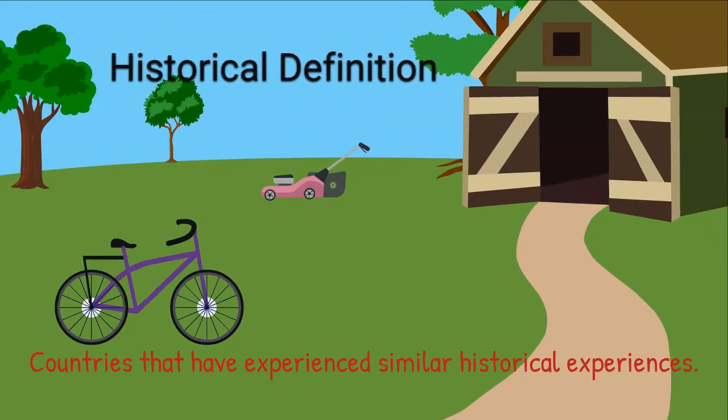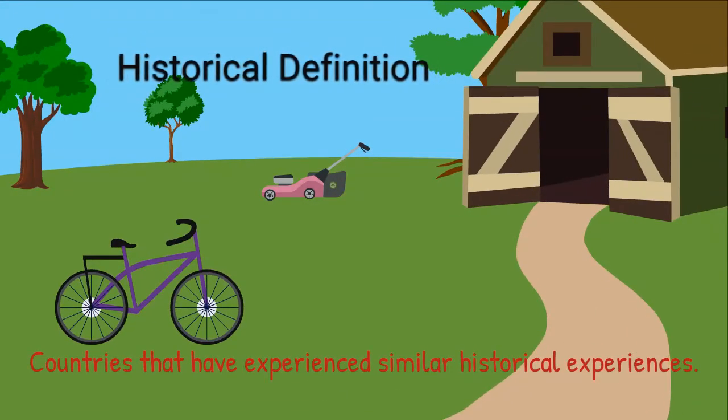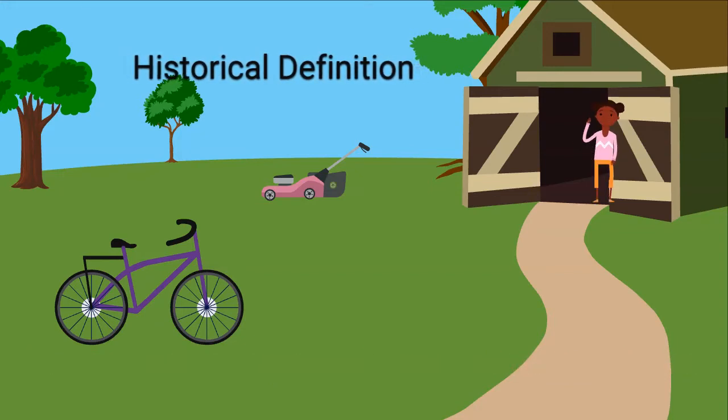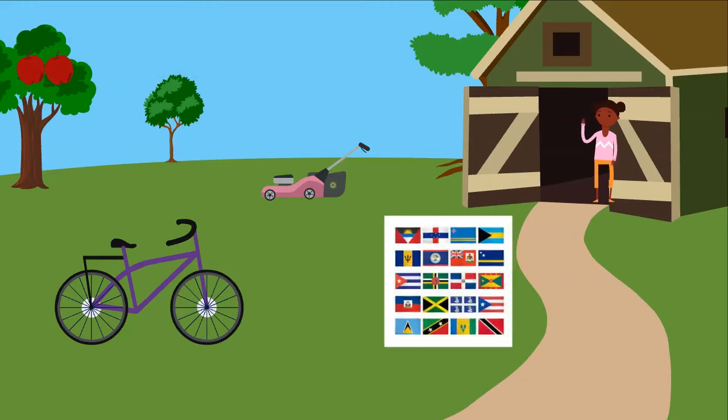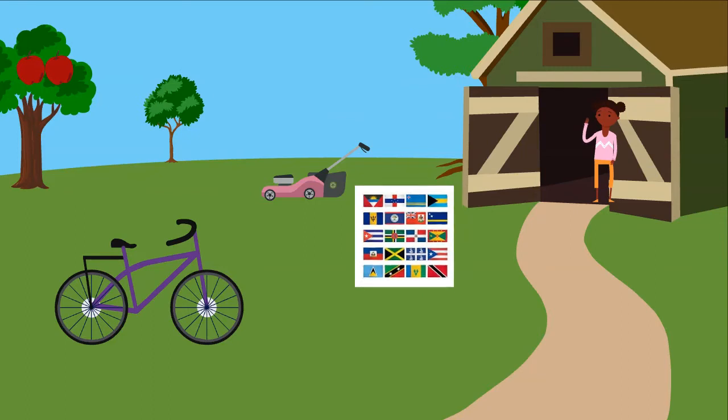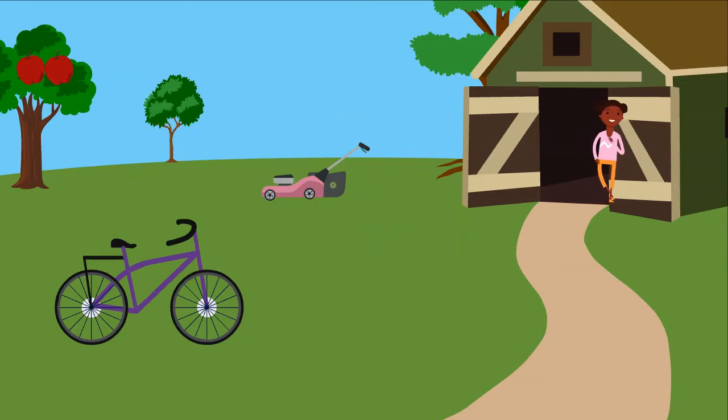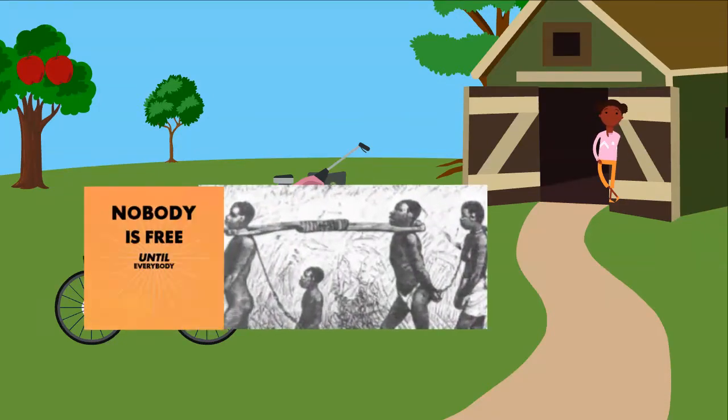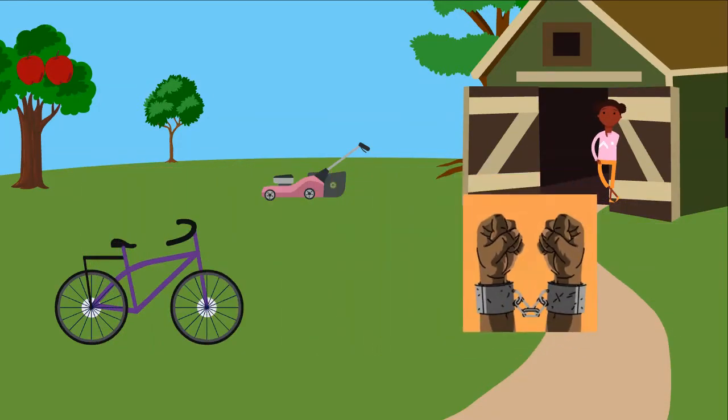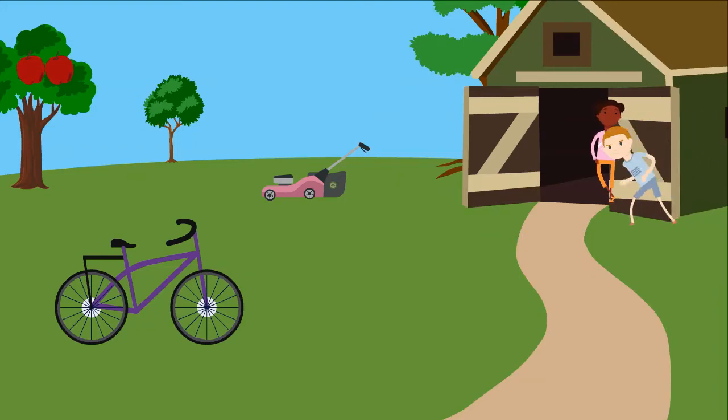The historical definition of the Caribbean refers to countries that experience similar historical experiences. This definition is the most inclusive because it speaks to the unique experiences of the different colonized countries within the Caribbean. Though the Caribbean experienced the same types of systems of production such as slavery, colonization, and the plantation system as many countries across the world did, it is the experience that makes the Caribbean different.